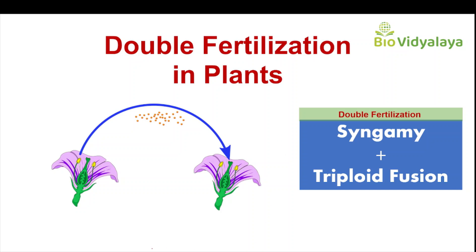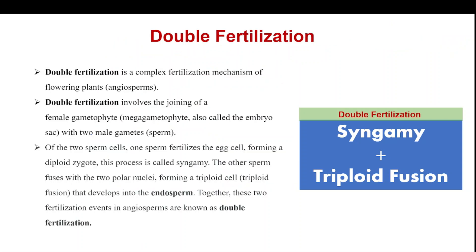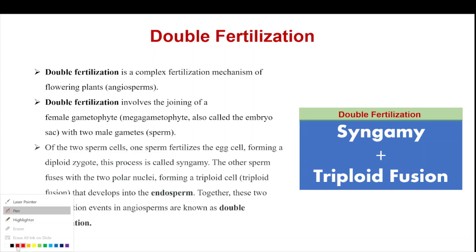Hello dear students, welcome to Bio Vidyalaya. Today I am covering a small topic from the NEET syllabus: double fertilization in plants. Fertilization means the fusion of female gametes with male gametes. Double fertilization is present in angiosperms, meaning flowering plants. It is a complex fertilization mechanism found in flowering plants.